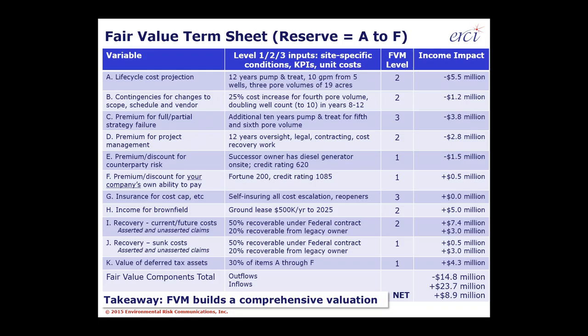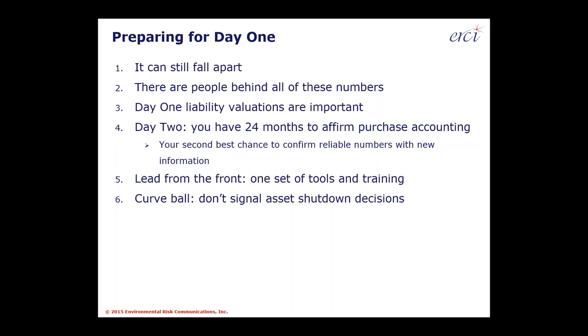The next item — contingencies — covers changes to scope, schedule, and vendor. For example, an assumption of a 25% cost increase, pumping out a fourth pore volume, and doubling the well count from 5 to 10 wells in years 8 to 12. That's a level-two assumption with an associated cost. For an individual site, this is what good due diligence looks like — getting the inflows and outflows on an expected value, present value, and fair value basis. This is what due diligence needs to look like because it provides that comprehensive evaluation that prevents deal teams and accounting teams from getting blindsided at day one.